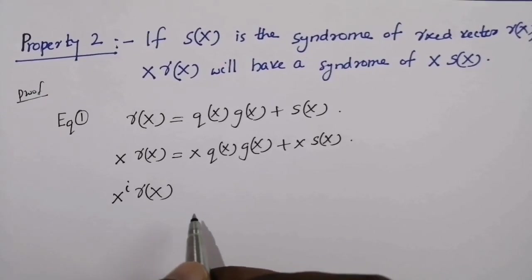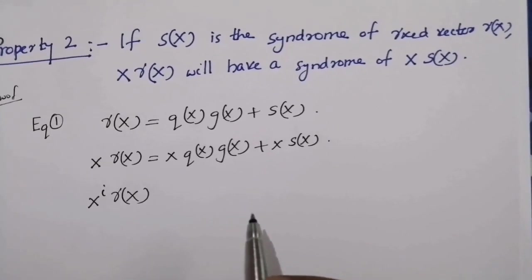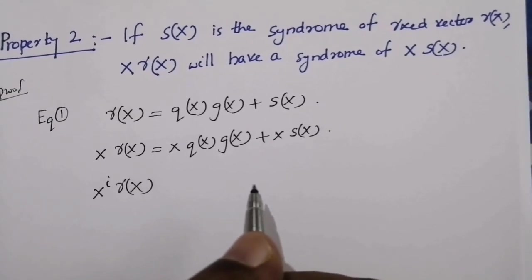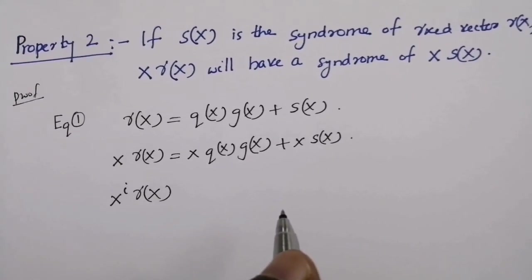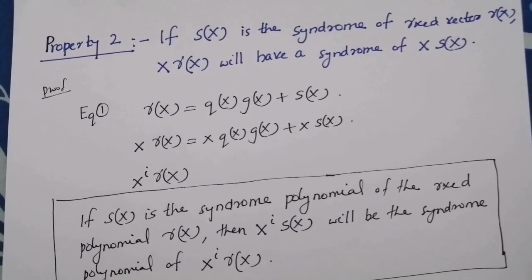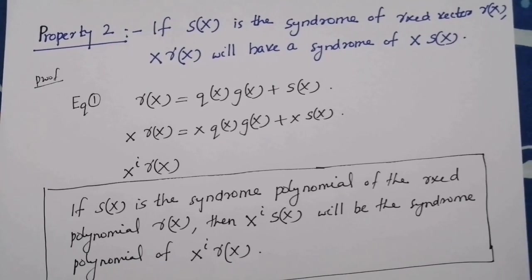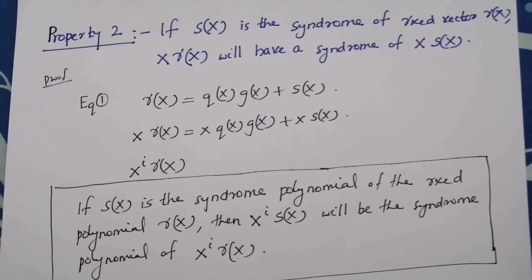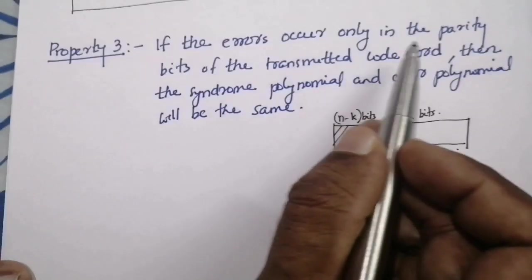Thus we may generalize the above result: if s(x) is the syndrome polynomial of the received polynomial r(x), then x^i·s(x) will be the syndrome polynomial of x^i·r(x). That is, the i-times right cyclic shifted version of r(x) will have a syndrome equal to the i-times right cyclic shifted version of the syndrome s(x).